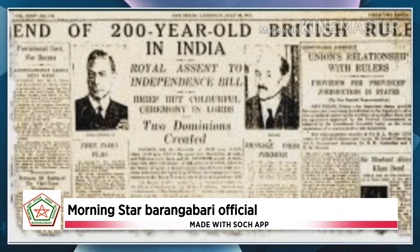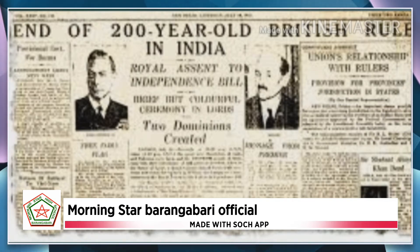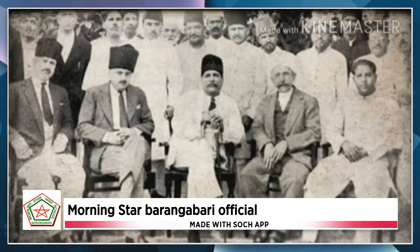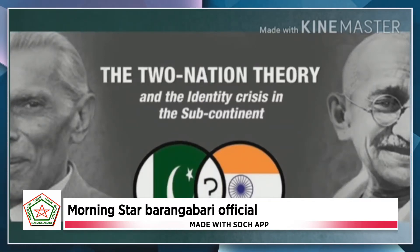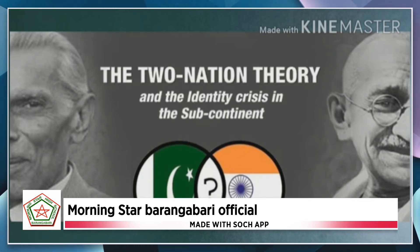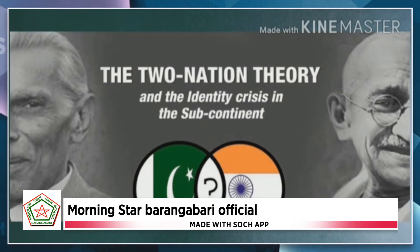Now let us discuss about the Muslim League. The Muslim League was always in support of the two-nation theory, and because of this, our country got divided into two parts — one part became Pakistan and the other part, as you all know, is India.